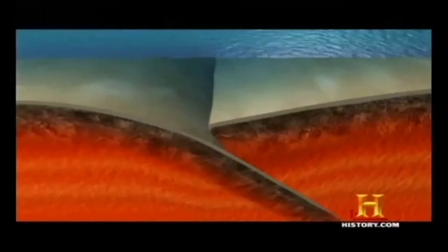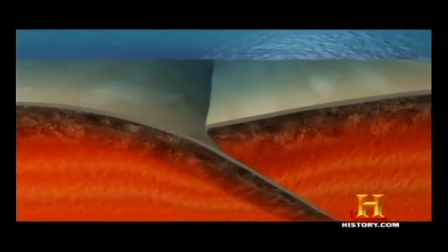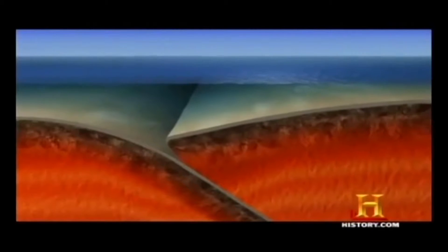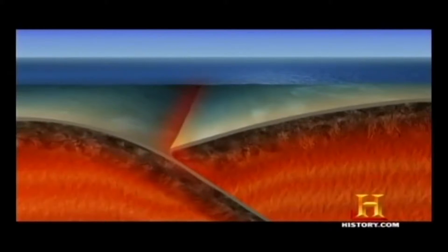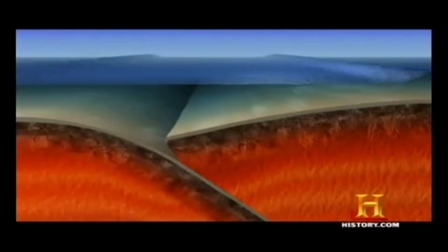Where two tectonic plates come together, such as in the case of the Indian Ocean tsunami in 2004, one plate pushes beneath the other and creates lots of friction and tension, dragging the upper plate down with it. That process can take hundreds or even thousands of years — it's a very slow process. But eventually the pressure of the lower plate trying to push back up wins, and it flips. That creates a megathrust, a sudden movement of the seabed, and that's what creates a phenomenal tsunami.